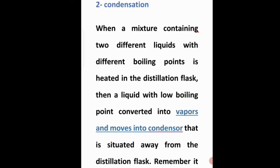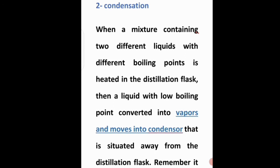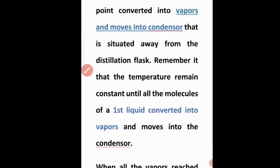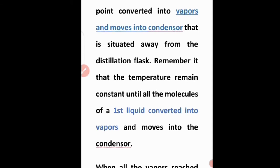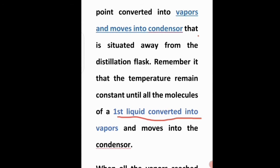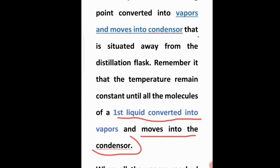The condenser is situated away from the distillation flask. During the distillation process, as the liquid is heated past its boiling point, the vapors move into the condenser. Remember: the temperature remains constant until all the molecules of the first liquid are converted into vapors and pass into the condenser.